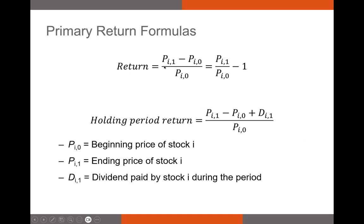Our return is just the price at the end of the period minus the price at the beginning, all divided by the price at the beginning — or equivalently, price at end divided by price at beginning minus one. The holding period return adds in the dividend or income received during the investment period: price at the end minus price at the beginning plus dividend, all divided by price at the beginning.